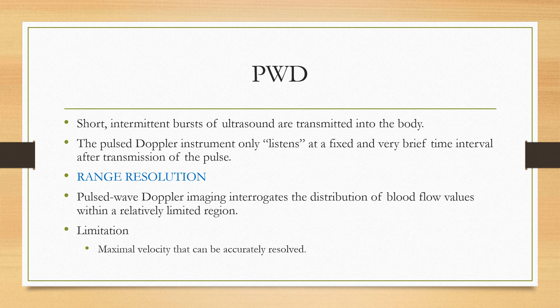We study the ultrasound waves which reach a particular sampling point. We can select the sampling point in the 2D image, and the transducer will receive reflected sound waves from the RBCs from that sampled point only. Even though RBCs between the transducer and the sampling point also absorb and reflect ultrasound waves, the transducer only listens to reflected waves from that particular sampling area at a fixed and very brief time interval after transmission of the pulse. This is the property of range resolution — a key characteristic of Pulse Wave Doppler.